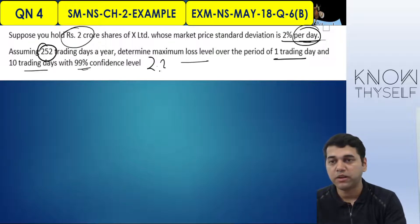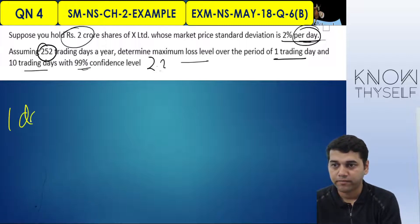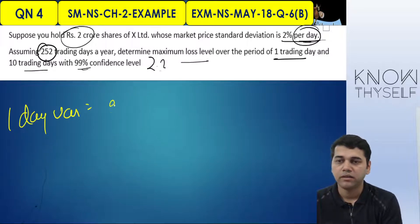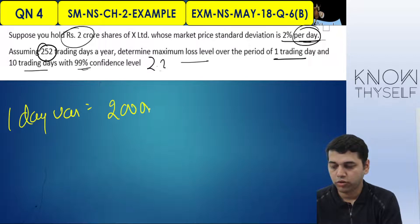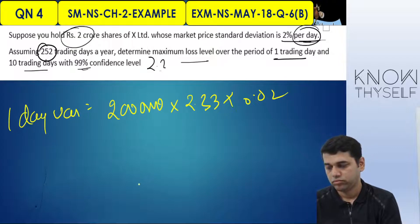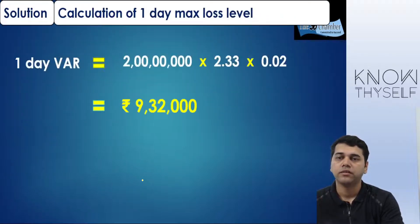99% confidence level means Z = 2.33. So what is my one-day VAR? Simple: 2 crore × 2.33 × 0.02 = 9,32,000 rupees maximum loss. You may incur up to 1 crore in extreme scenarios, but with 99% confidence the maximum is 9,32,000.